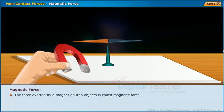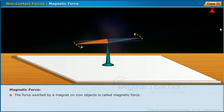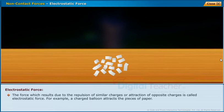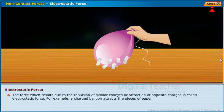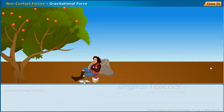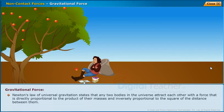The force exerted by a magnet on iron objects is called magnetic force. The force which results due to the repulsion of similar charges or attraction of opposite charges is called electrostatic force — for example, a charged balloon attracts pieces of paper. Newton's law of universal gravitation states that any two bodies in the universe attract each other with a force that is directly proportional to the product of their masses and inversely proportional to the square of the distance between them.